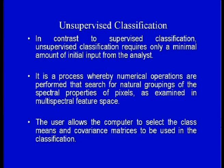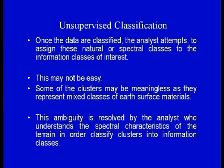In this session, the other type of classification techniques, that is, unsupervised classification would be discussed. In contrast to supervised classification, unsupervised classification requires only a minimal amount of initial input from the analyst. It is a process whereby numerical operations are performed that search for natural groupings of the spectral properties of the pixels as examined in the multispectral feature space. The user allows the computer to select the class means and the covariance matrices to be used in the classification. Once the data are classified, the analyst attempts to assign these natural or spectral classes to the information classes of interest. This is not an easy task. Some of the clusters may be meaningless as they represent mixed classes of earth surface materials.